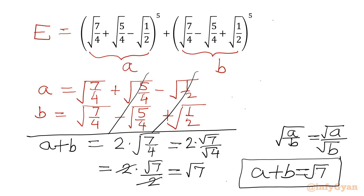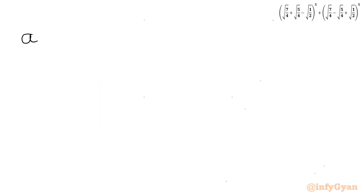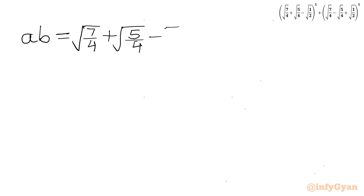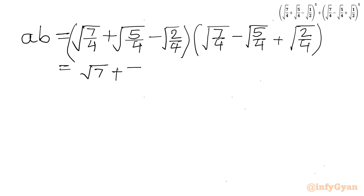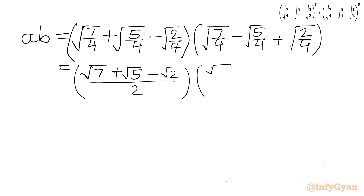Now we will calculate the product A times B. Let us write A = [√7 + √5 − √2] / 2, noting that 1/2 can be written as 2/4 so the denominators are the same. Similarly B = [√7 − √5 + √2] / 2, giving us the denominator as √4 = 2. So A × B = (√7 + √5 − √2)/2 × (√7 − √5 + √2)/2.